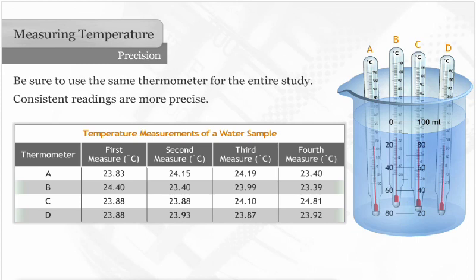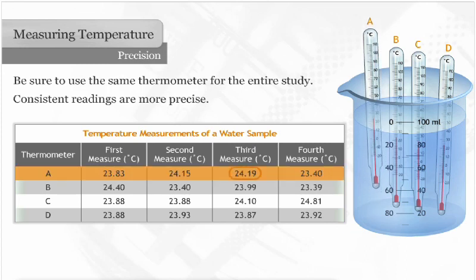For example, look at temperatures taken using thermometer A. The highest is 24.19, and the lowest is 23.40. The difference is 0.79.